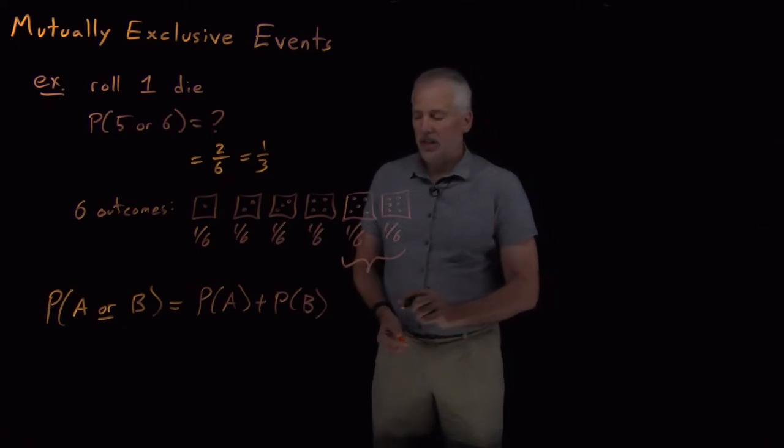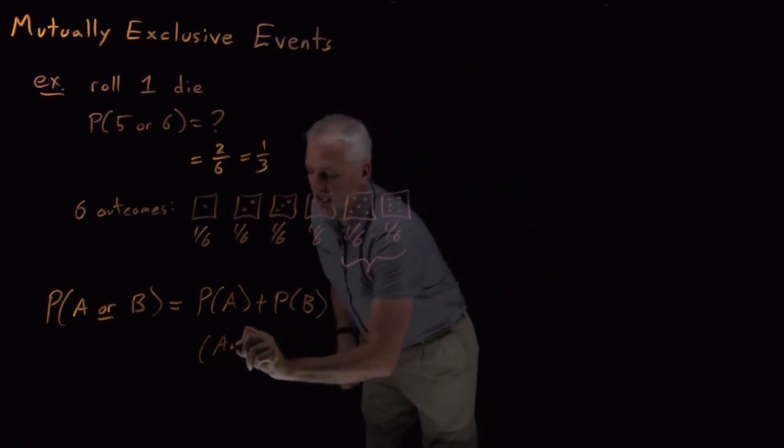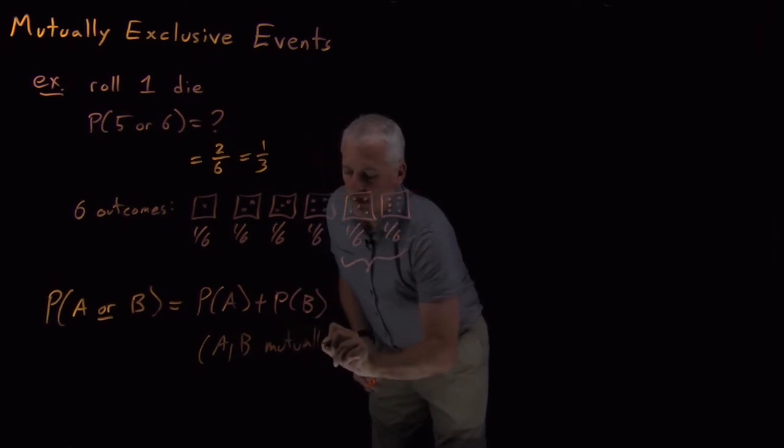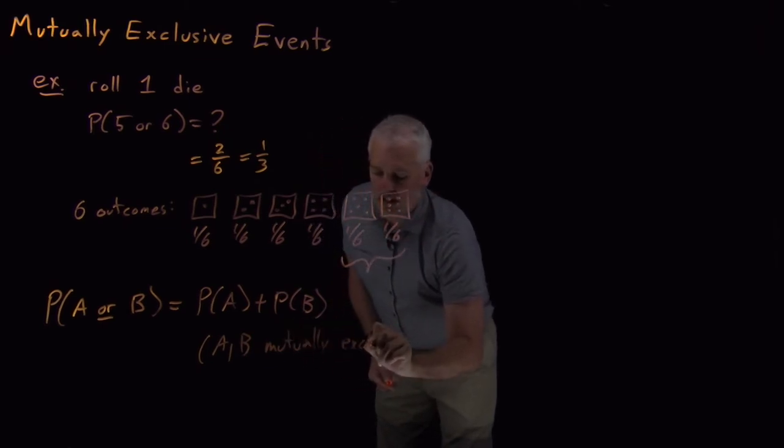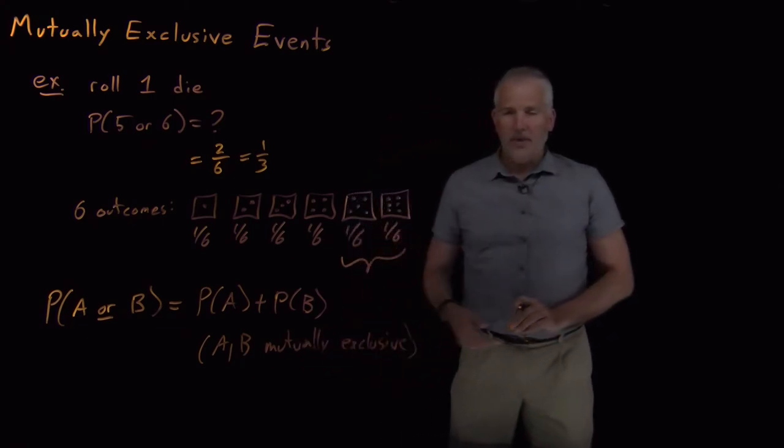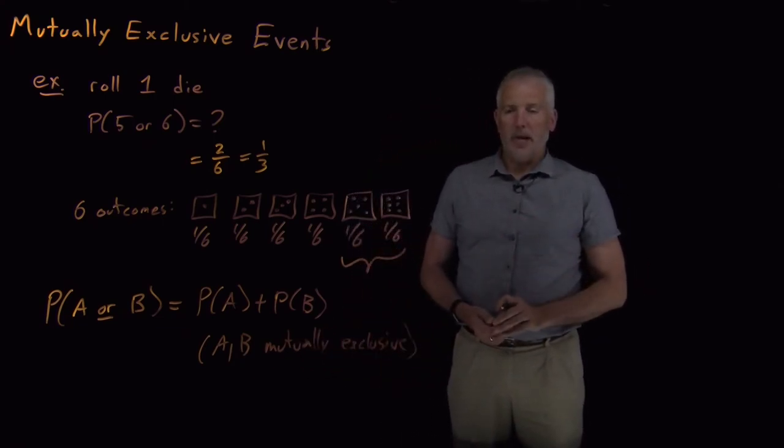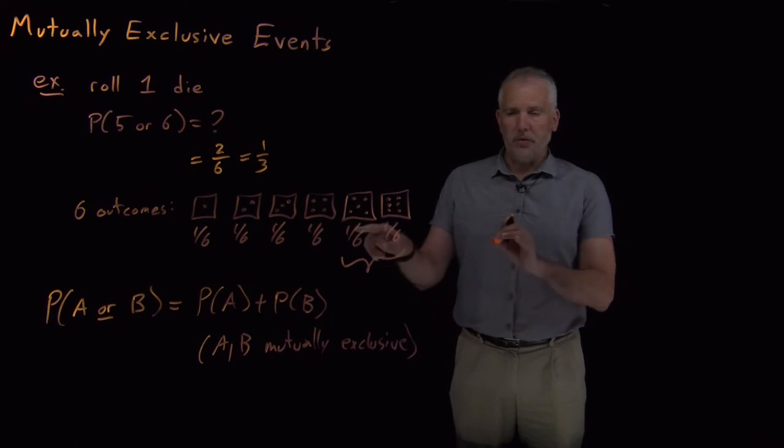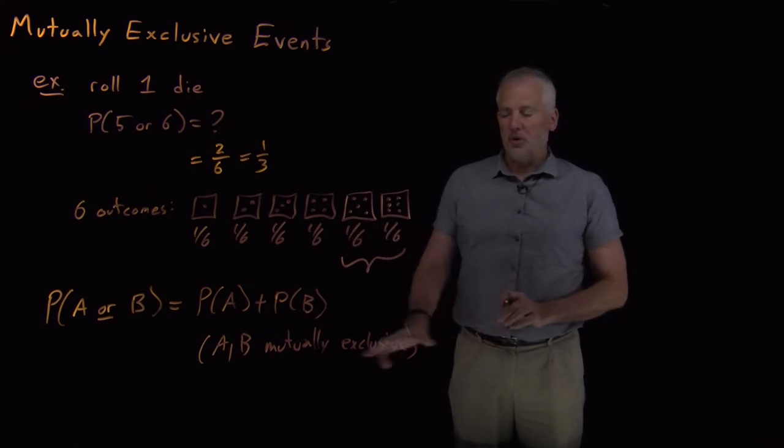That rule happens as long as events A and B are what we call mutually exclusive, meaning if one of them happens it excludes the possibility of the other one happening. If I roll a five I can't also have rolled a six, if I roll a six I can't also have rolled a five. Those two events exclude each other mutually, they're mutually exclusive.